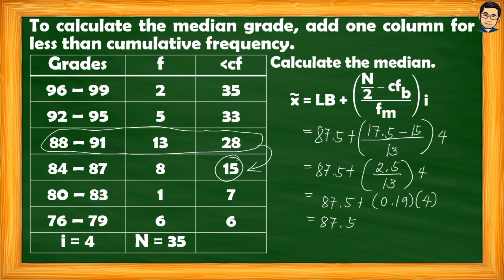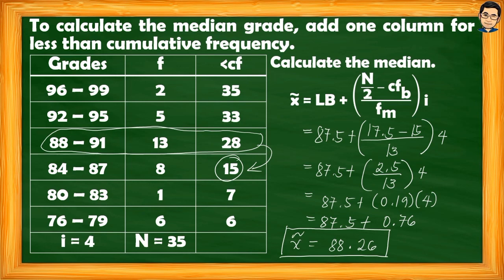Substituting: 87.5 + [(17.5−15)/13 × 4] = 87.5 + [2.5/13 × 4] = 87.5 + [0.19 × 4] = 87.5 + 0.76 = 88.26. The median grade of the Grade 7 Rose students is 88.26, which rounds to 88. There may be decimal values in the result, though some instances yield exact whole numbers.